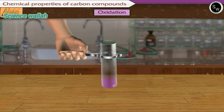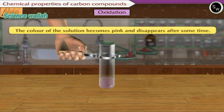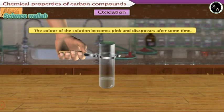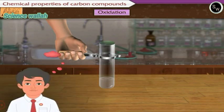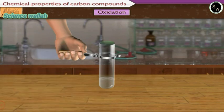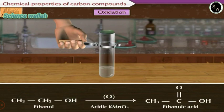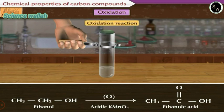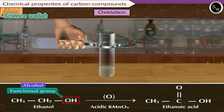The color of the solution is seen to have become pink and disappeared after some time. Why does this happen? In this activity, due to potassium permanganate in the basic solution, ethanol has got oxidized forming ethanoic acid. Therefore, this is an oxidation reaction. Only some chemical bonds near the functional group take part in this reaction.